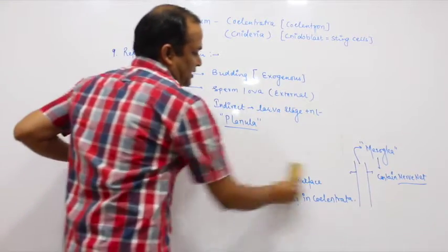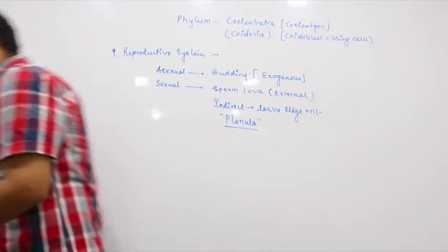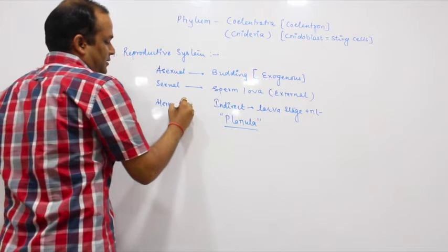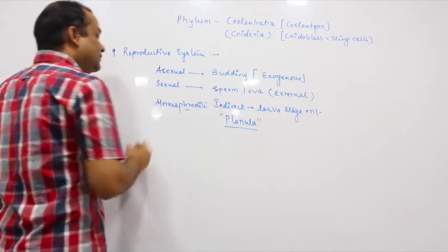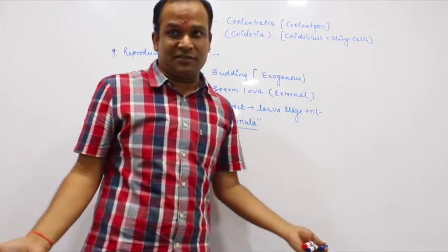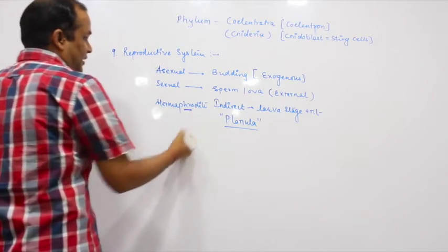Organisms are generally hermaphrodite. Male and female sex organs are present in the same organism. But the fertilization is cross fertilization.